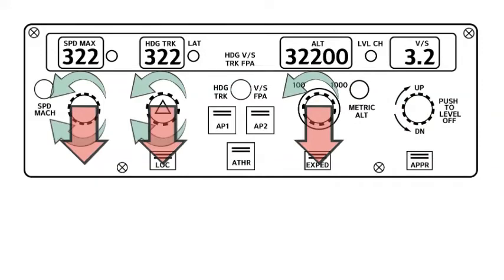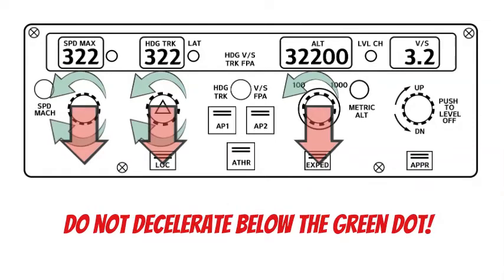When appropriate, the PF requires the ECAM actions. The aircraft speed quickly reduces at high flight levels, close to the weight limits. Thus, the flight crew should not delay to descent. The crew must not decelerate below the green dot.